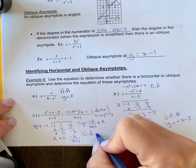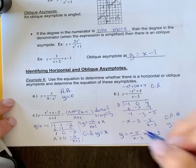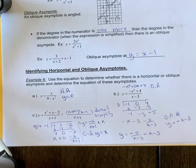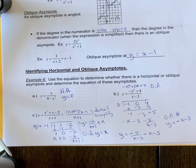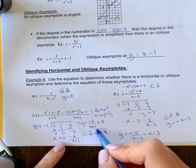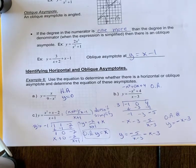So it would be y equals x, which is a linear function. The y-intercept just happens to be zero, or your b value is zero. So here is your oblique asymptote.